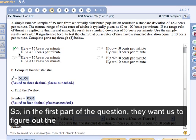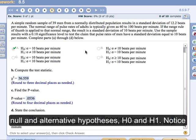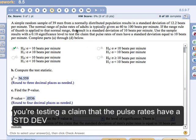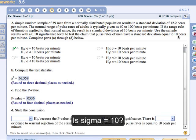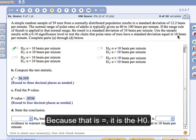So in the first part of the question, they want us to figure out the null and the alternative hypotheses, H0 and H1. You notice you're testing a claim that the pulse rates have a standard deviation, sigma is the symbol, equal to 10. So that's what you're testing. Is sigma equal to 10? And because that is equals, it's the H0.